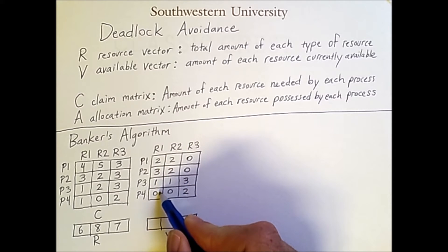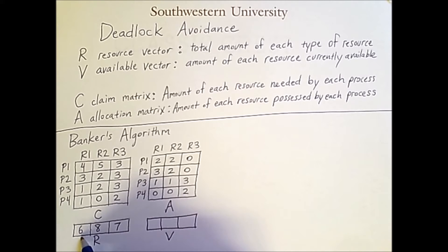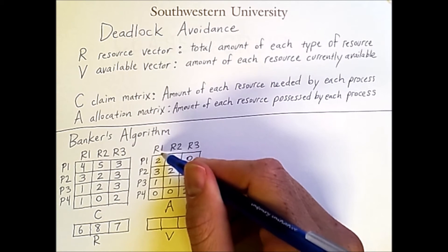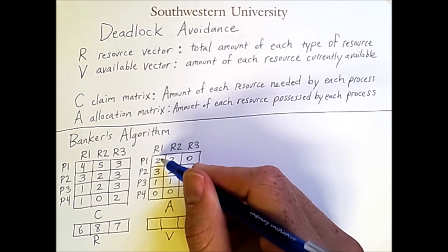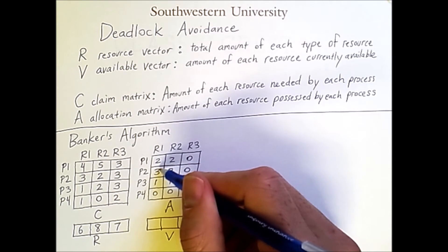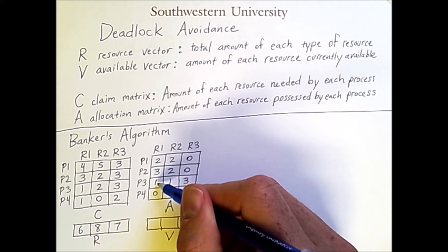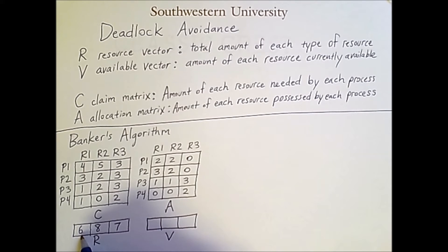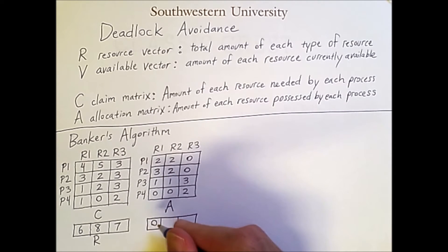All we do is add up all of the values in the given column here to find out how many units of that resource are currently allocated. And then we subtract that from the resource vector, which is the total amount of that resource in the system. So for resource type 1, there are 1, 2, 3, 4, 5, 6 units currently claimed out of a total of 6. So 6 minus 6 is 0, meaning 0 units of resource type 1 are currently available in the system.